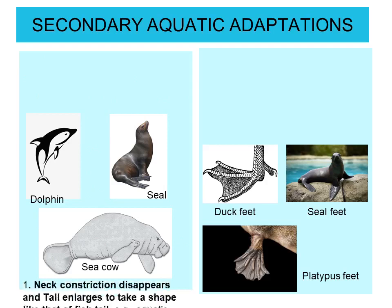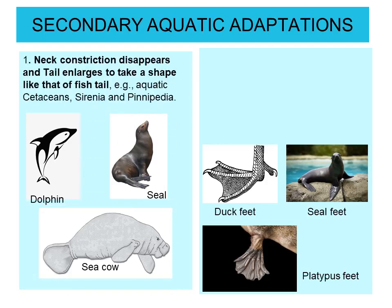Coming to secondary aquatic adaptations — they are shown by a large number of individuals. The first adaptation is that neck constriction disappears and the tail enlarges to take the shape of a fish tail. For example, in aquatic cetaceans, sirenia, and pinnipedia — such as dolphins, seals, and sea cows — neck constriction disappears and the tail enlarges to take the shape of a fish tail.